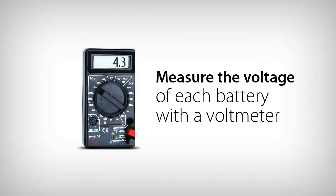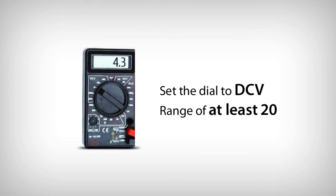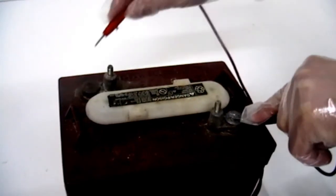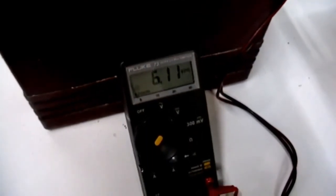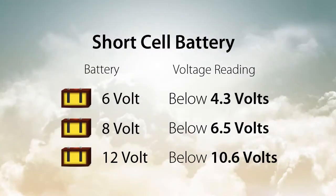To use a voltmeter, set the dial to DCV with a range of at least 20. Hold the red lead from the voltmeter to the positive battery terminal, then hold the black lead from the voltmeter to the negative battery terminal. The voltage of the battery will appear. Reference this chart to determine if a battery has a short cell.